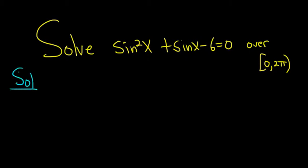So it looks like we have a quadratic equation in sine x. So we should definitely try to factor it. So we know it should look something like this. Because when you multiply sine x times sine x, you get sine squared x. So we need two numbers that multiply to negative 6 but add to 1.